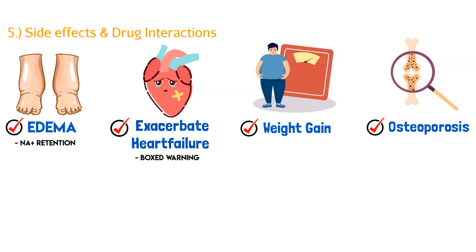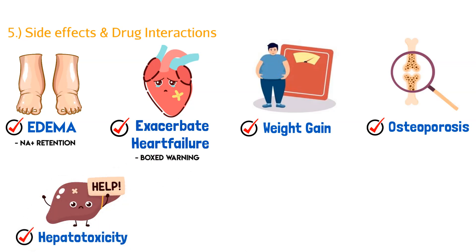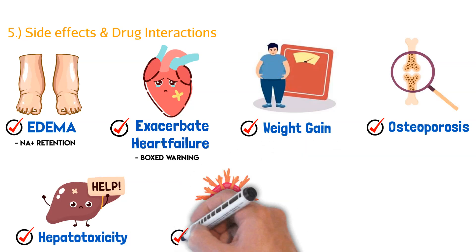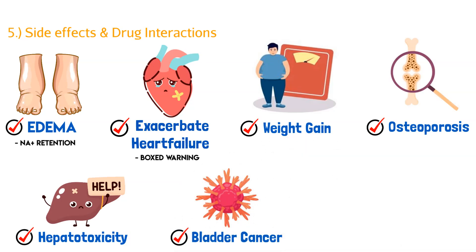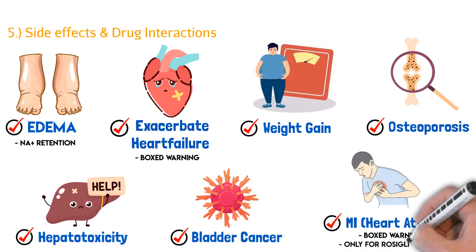We can also see osteoporosis in some patients after they've been taking this medication for a long time. There are also some more rare side effects: hepatotoxicity, which is very rarely seen, and a risk of bladder cancer, also very rare. Finally, there's MI — myocardial infarction. This is a boxed warning only for rosiglitazone. Because rosiglitazone can increase your LDL, it can have cardiovascular side effects like a heart attack, so it makes sense that rosiglitazone carries this boxed warning for MI potential.